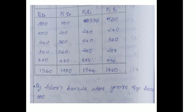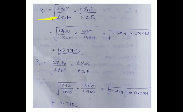We calculate the necessary columns: Q0·P0, Q1·P1, Q0·P1, Q1·P0. Substituting values, P01 equals the square root of (summation Q0·P1 / summation Q0·P0) into (summation Q1·P1 / summation Q1·P0), approximately equal to 1.3975. Then P10 equals approximately 0.7153.